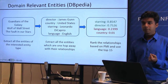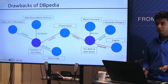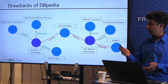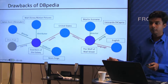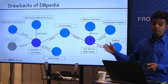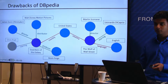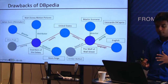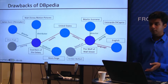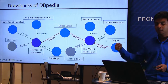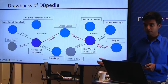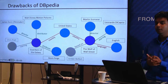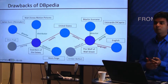However, DBpedia has drawbacks. First, not all relationships are present — for example, Chris Pratt starred in Guardians of the Galaxy but that relationship is absent from DBpedia. Second, entities themselves may not be present — Jordan Belfort, the character on whom Wolf of Wall Street is based, is not in DBpedia. To address this, we use the more comprehensive Wikipedia as a second feature for domain-relevant entities.